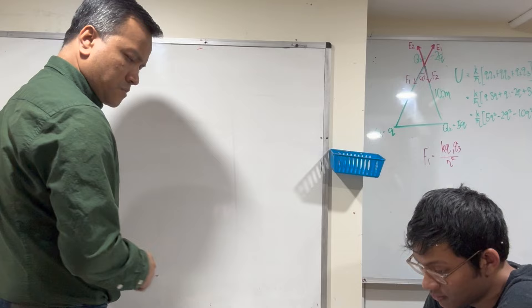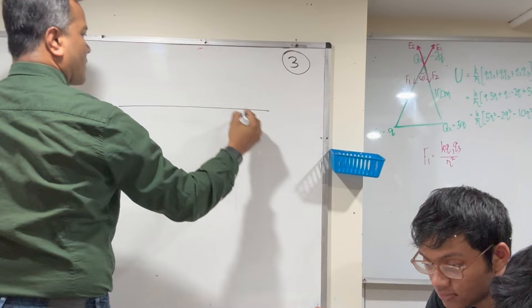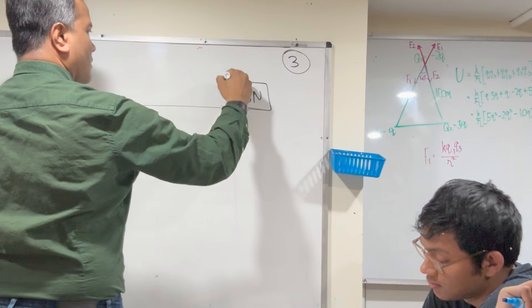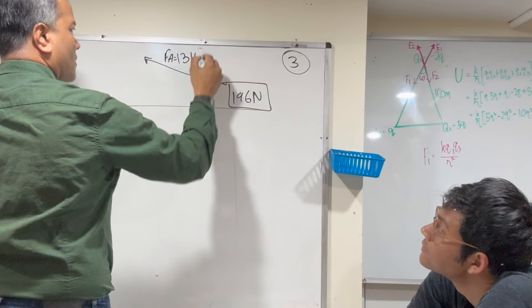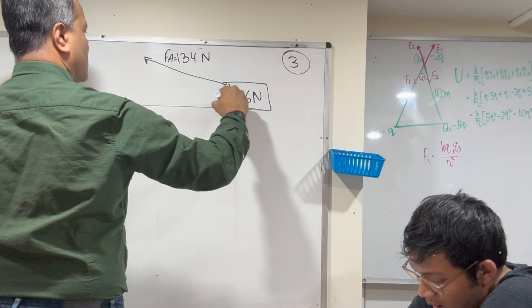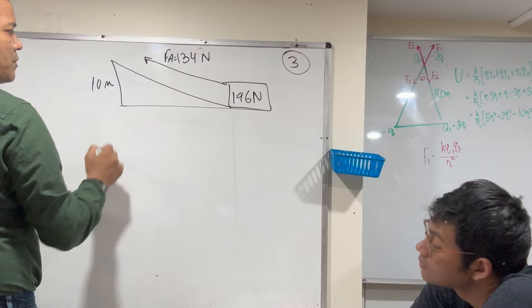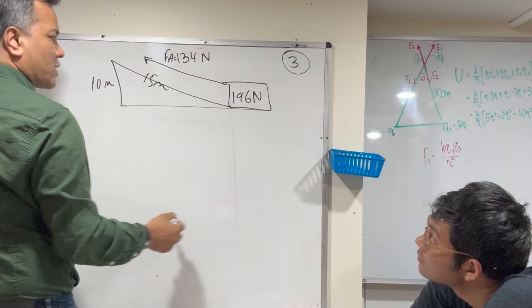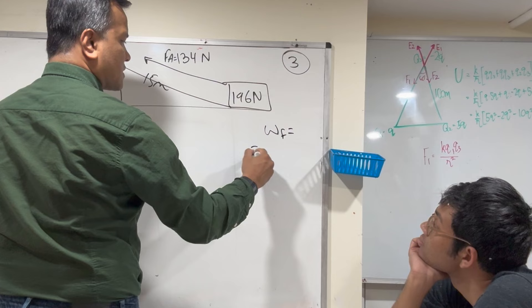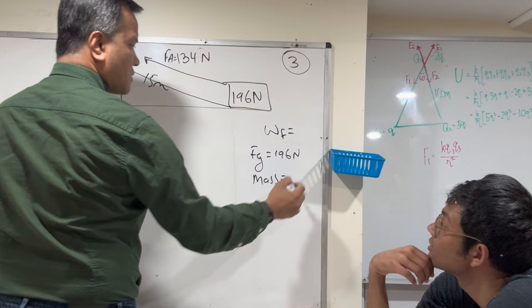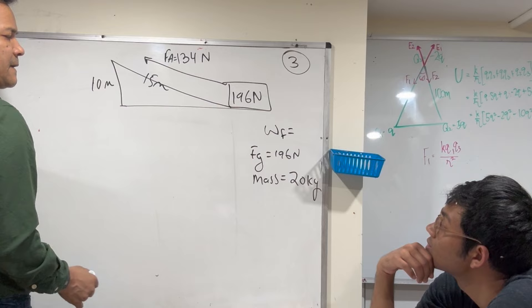Problem number three: A 196-Newton box is pulled up a 15-meter-long incline by a constant force of 134 Newtons. The vertical height gained is 10 meters. What is the work done by friction? The weight is 196 Newtons. What is the mass? 20 kilograms.